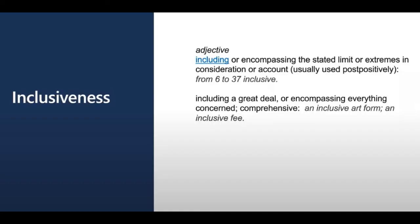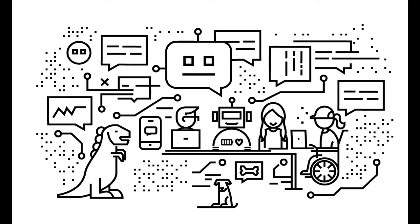Inclusiveness: everyone should benefit from intelligent technology, meaning it must incorporate and address a broad range of human needs and experiences. A responsible AI system should empower everyone and bring benefits to all parts of society regardless of physical ability, gender, sexual orientation, ethnicity, or other factors.